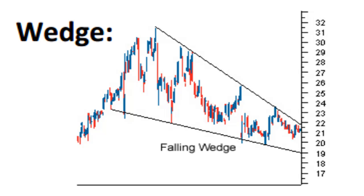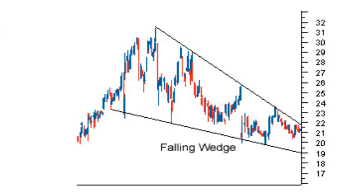The wedge chart pattern can be either a continuation or reversal pattern. It is similar to a symmetrical triangle except that the wedge pattern slants in an upward or downward direction, while the symmetrical triangle generally shows a sideways movement. Wedges tend to form over longer periods, usually between three and six months. At the most basic level, a falling wedge in an uptrend is bullish and a rising wedge in a downtrend is considered bearish.